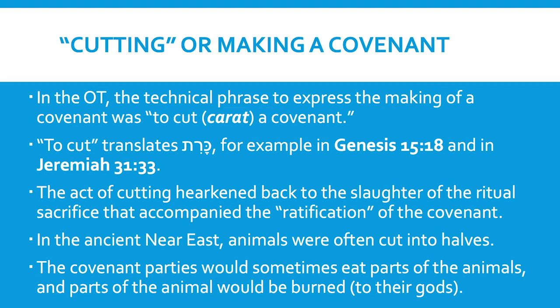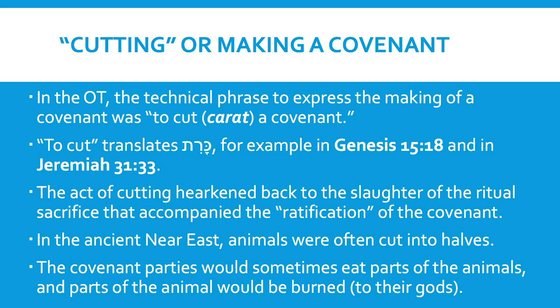Repeatedly throughout the Old Testament, people and God make covenants. Behind the English word 'make' when used in the context of making a covenant, there's actually the Hebrew word for 'cut.' The technical phrase 'to make a covenant' is really the translation of 'to cut a covenant' — karat berit — which occurs throughout the Old Testament. Whenever you see the phrase 'making of a covenant,' it would be more precisely 'the cutting of a covenant.' Let's look first at Jeremiah chapter 31 verse 33.